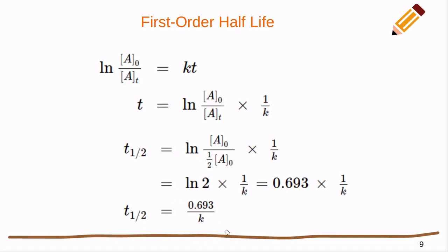For the first order reaction, we start with the integrated rate law form and solve for t. The half-life t₁/₂ is the time when the concentration is one half of the initial concentration. We make that substitution, and we can see that the initial concentration cancels. We wind up with the natural log of 2 — which is where that number comes from as a decimal — divided by our reaction constant k.